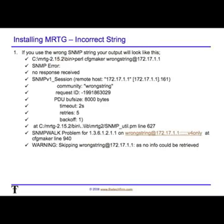If you use the incorrect string or incorrect IP and type the CFGMaker command with the wrong string, you will see an error message — typically 'SNMP error: no response received.' If you have those types of errors, you cannot use that device, or you'll have to figure out why you cannot access it using SNMP. In this case, we are using SNMP version 1.